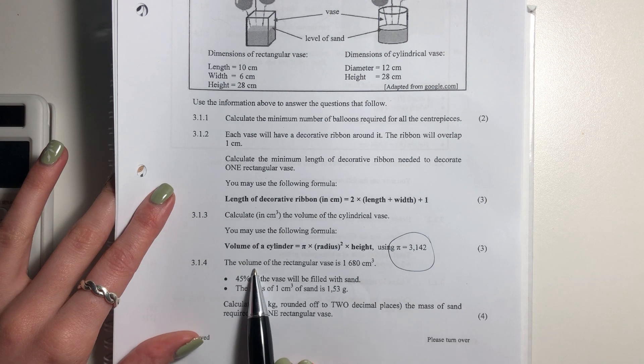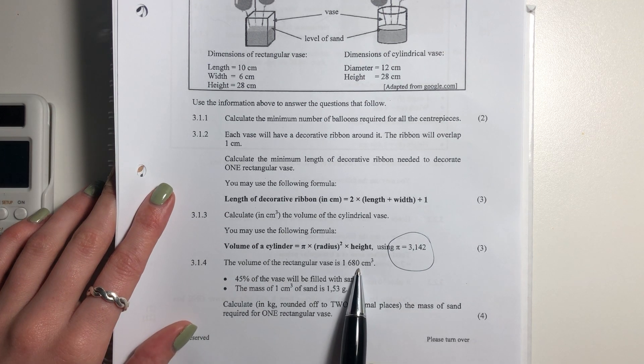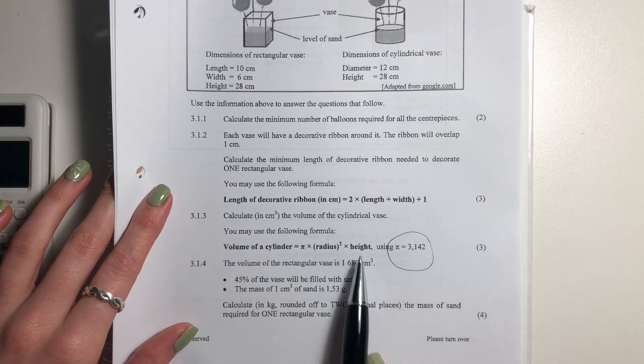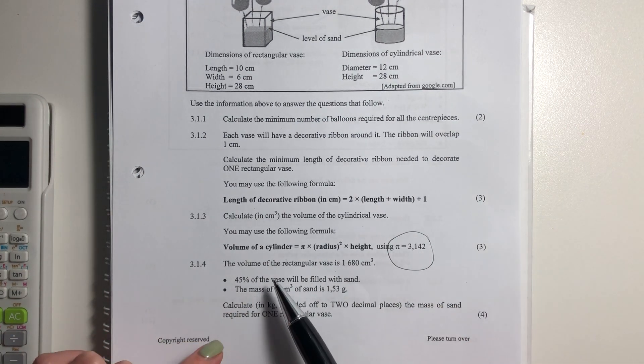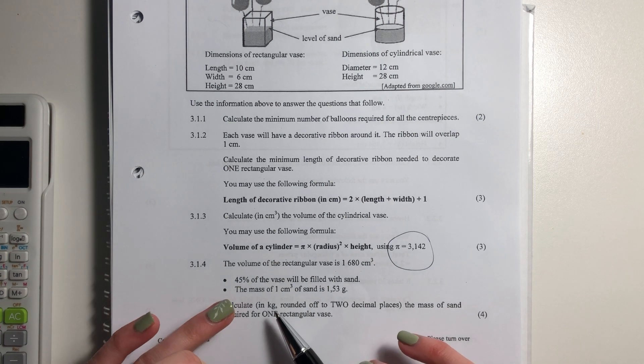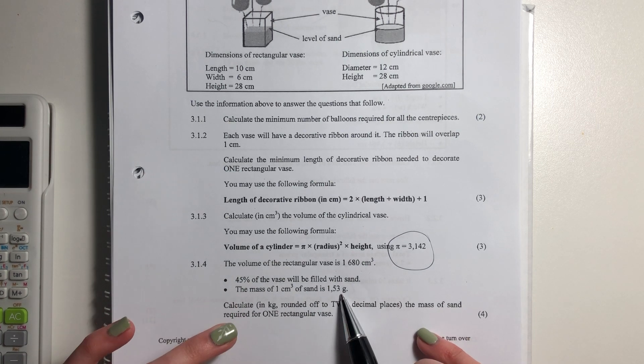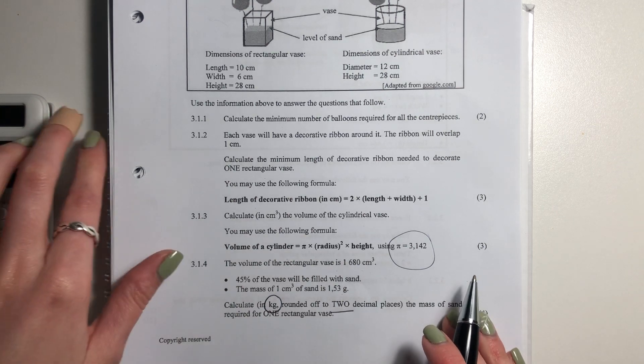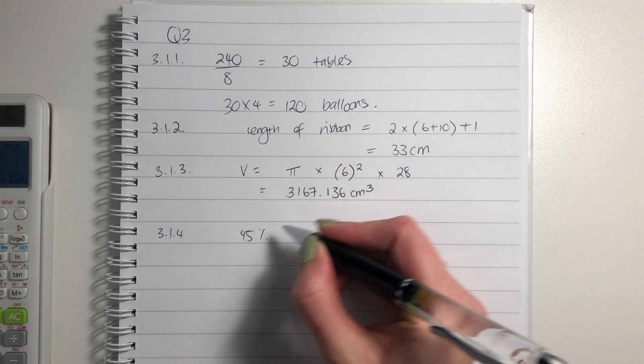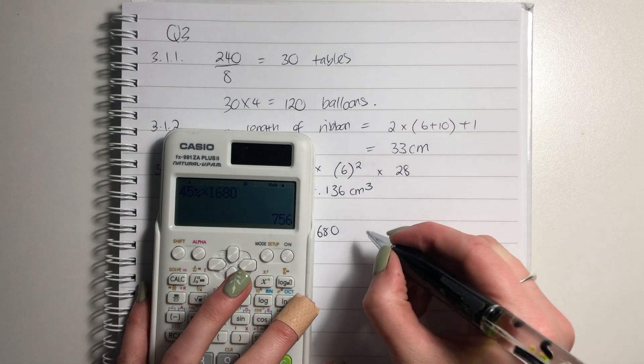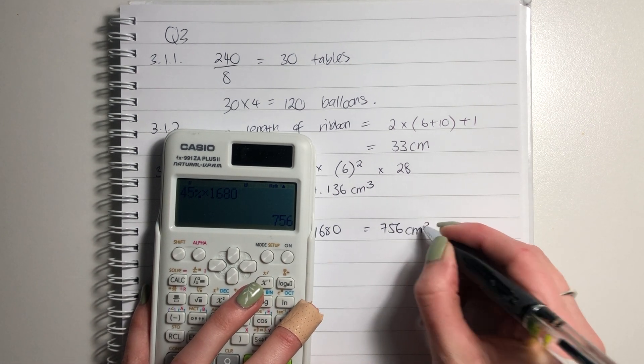Let's now go for the last question. It says the volume of the rectangular vase is this much. So it's a bit different to what we got in our question, which is not a problem. This is the rectangular vase. So it's important to read your questions. The volume of the rectangular vase is 1,680 centimeters cubed. 45% of the vase will be filled with sand. So it's not the whole thing. It's only 45%. The mass of 1 centimeter cubed of sand is 1.53 grams. Calculate in kg to two decimal places the mass of the sand. So first thing we're going to do is we're going to say 45% times by 1,680. Because that's the volume that we're actually interested in. So 45% times by 1,680. And that would be 756.